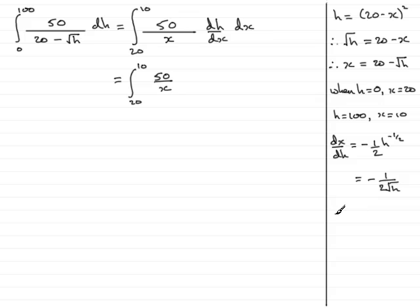So therefore, dh by dx will be equal to minus 2 root h. But I need dh by dx in terms of x, I need the whole integral in x. So what does root h equal? Well, I can see up here that root h is 20 minus x. So this is the same as minus 2 times 20 minus x.